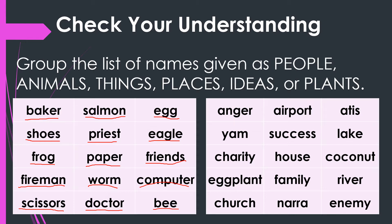For the second group, we have: anger, water, airport, atis, yam, success, lake, charity, house, coconut, eggplant, family, river, church, nara, and enemy.